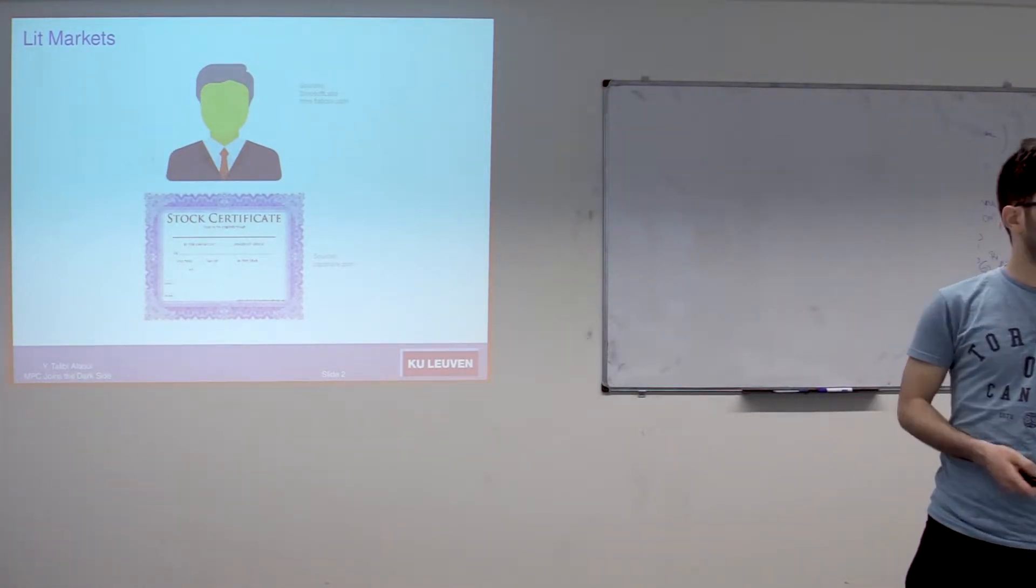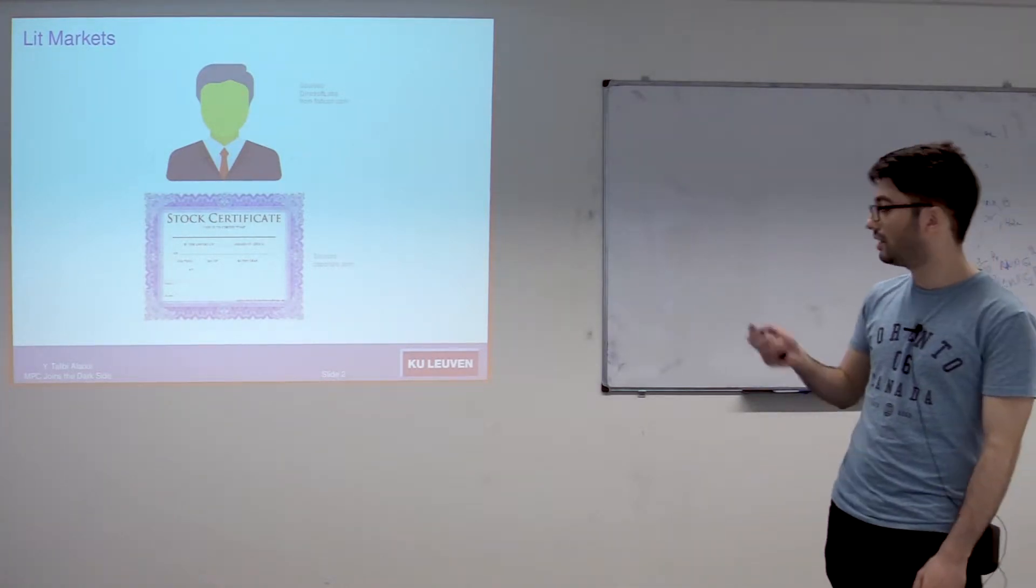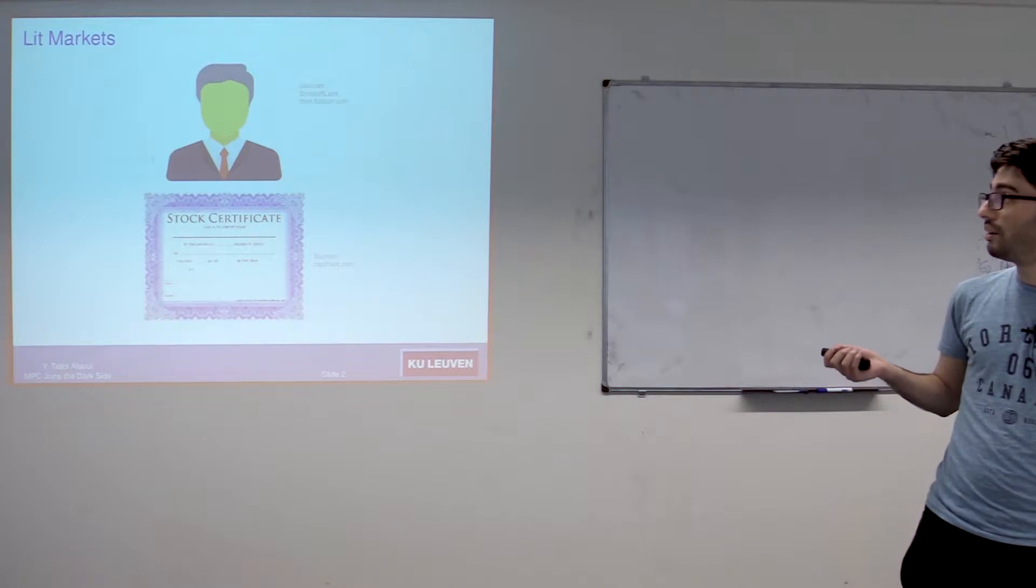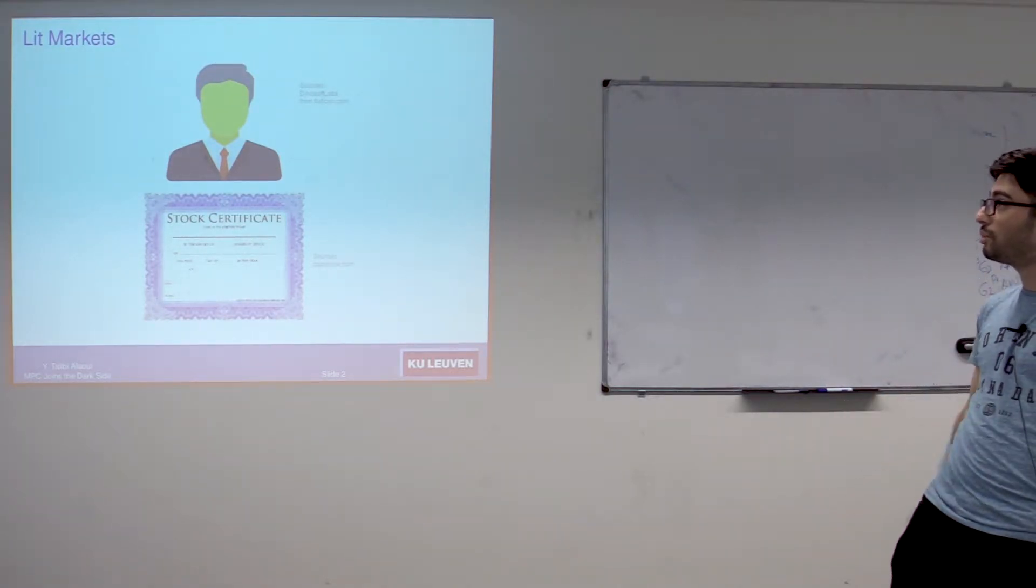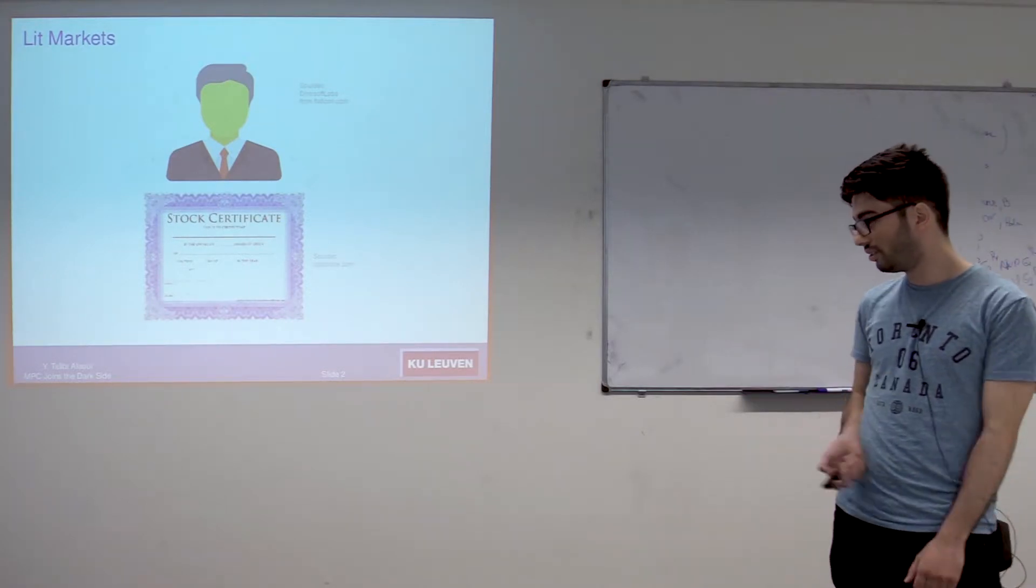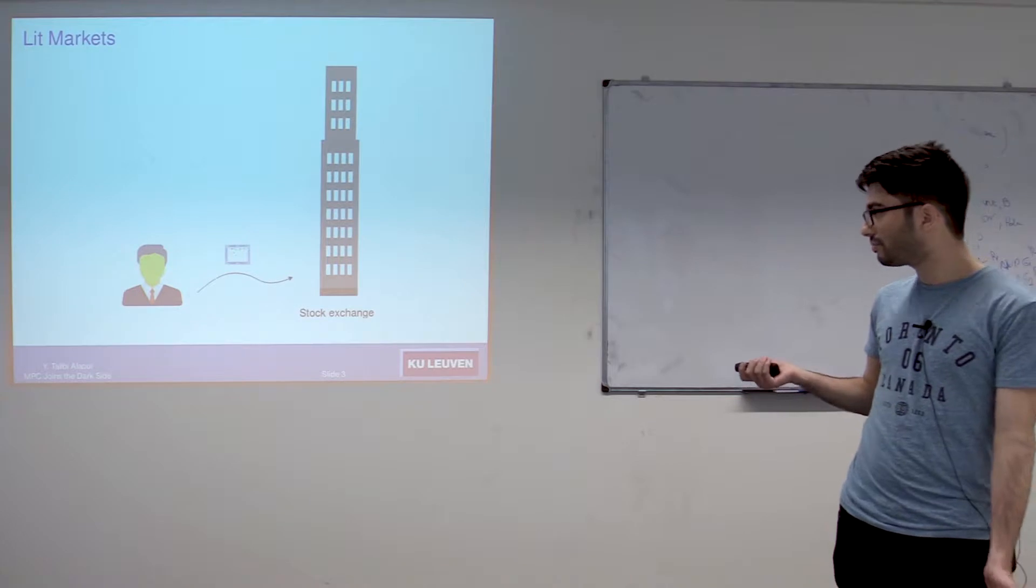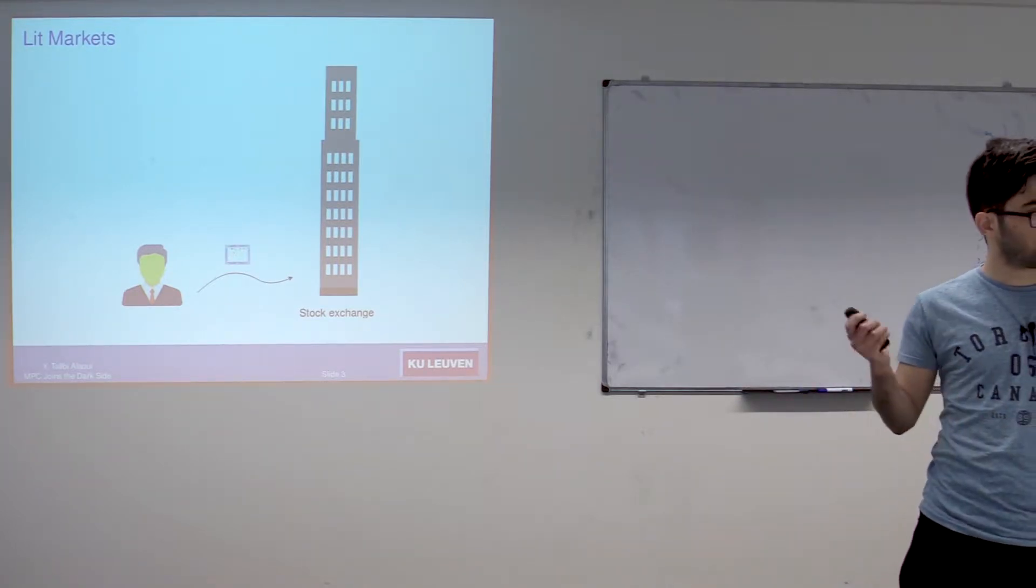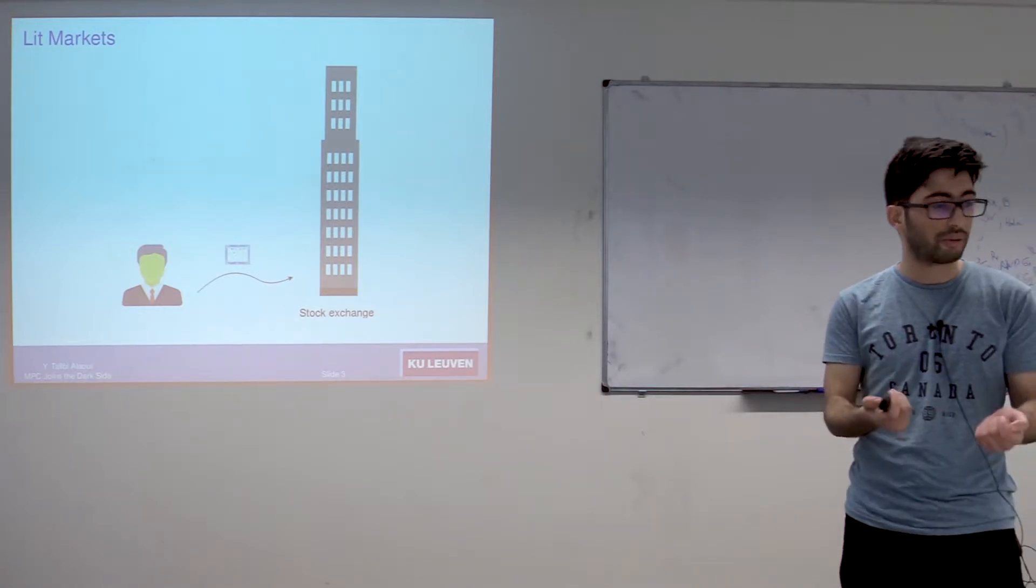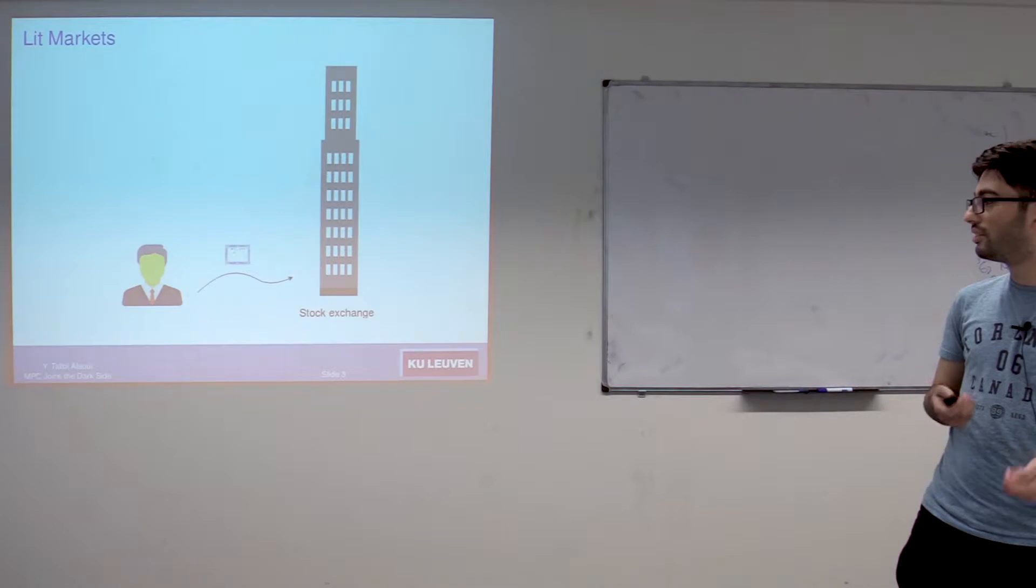Before getting to dark markets, I will first go over how trading is traditionally done in financial markets, also called trading in lit markets. This is Bob, and Bob holds some shares in some corporate. For some reason, Bob decided to sell part of his shares, so the traditional way to do this is to go to a stock exchange, place his order, and then the stock exchange needs to find a match for Bob, someone who's willing to buy the shares from him.